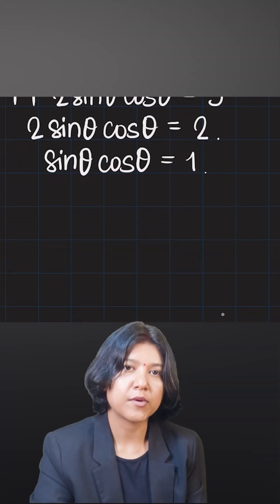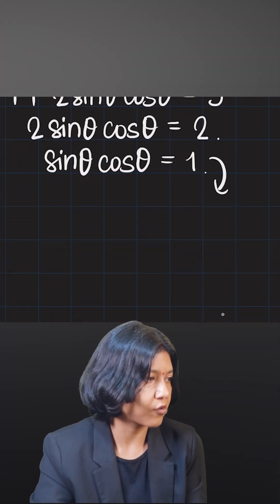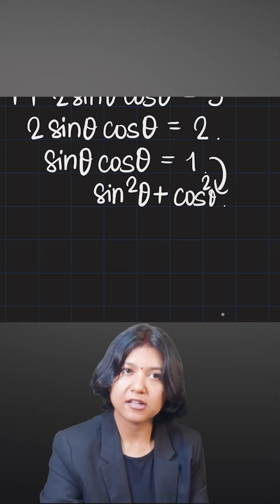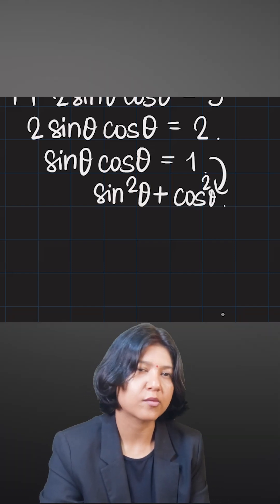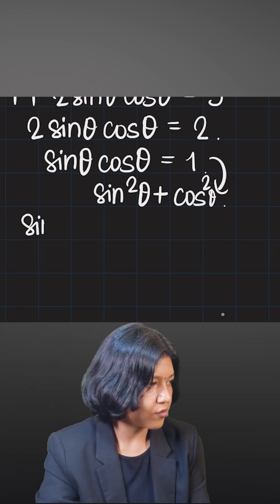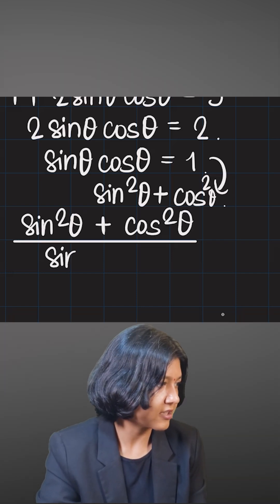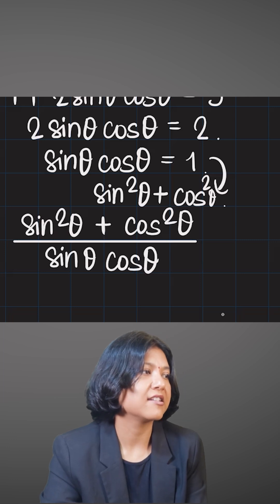Remember, 1 was again the other way I could write this. 1 was sine square theta plus cos square theta, right? So what I'm saying is sine theta cos theta equals sine square theta plus cos square theta. Now if that is so, then I can divide both sides by sine theta cos theta.